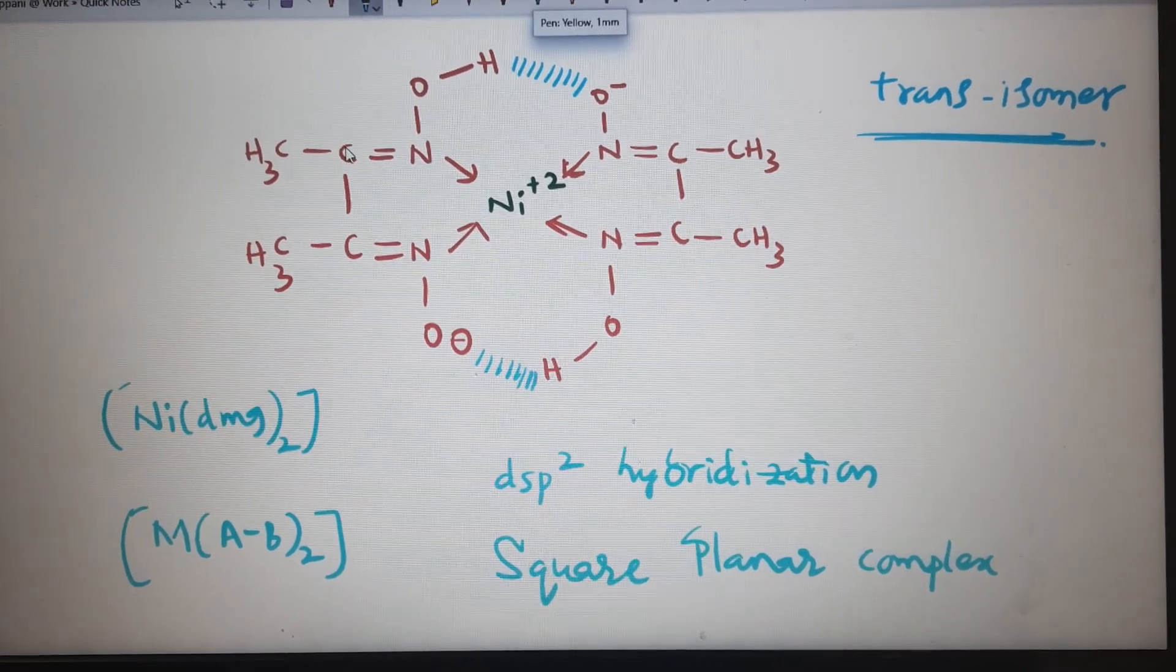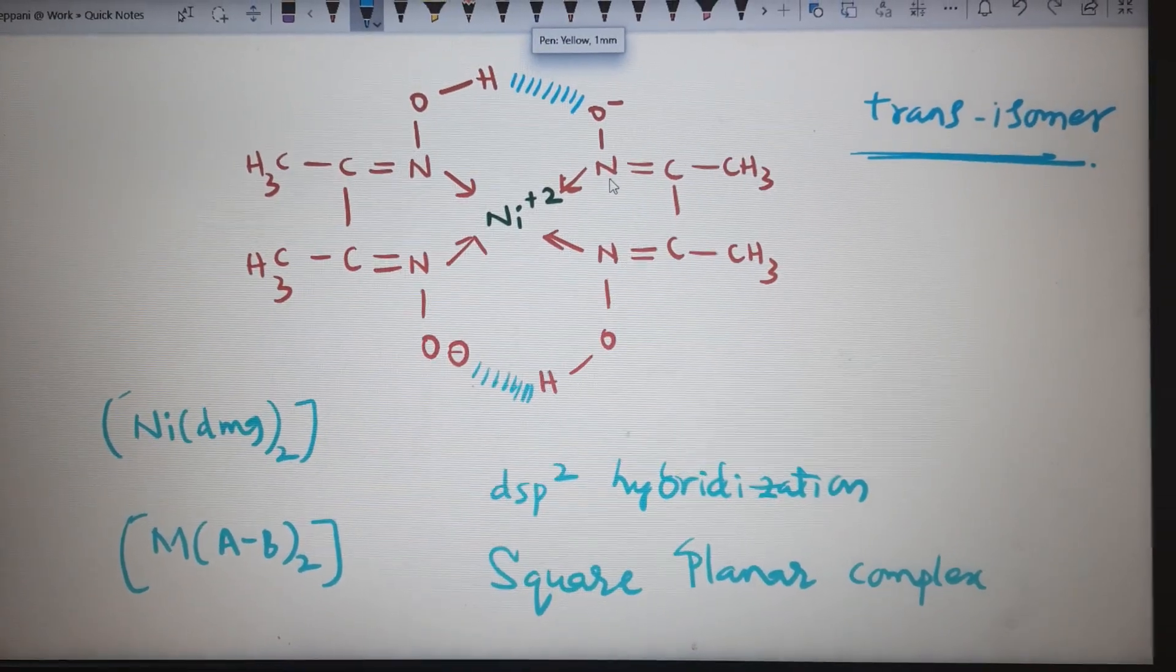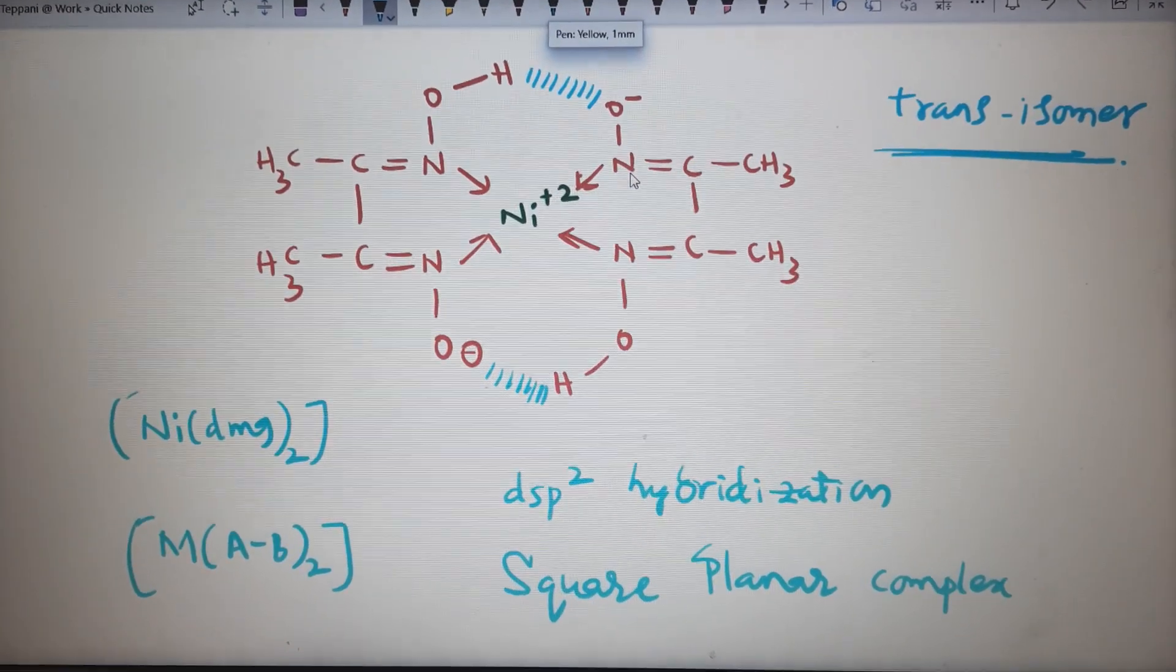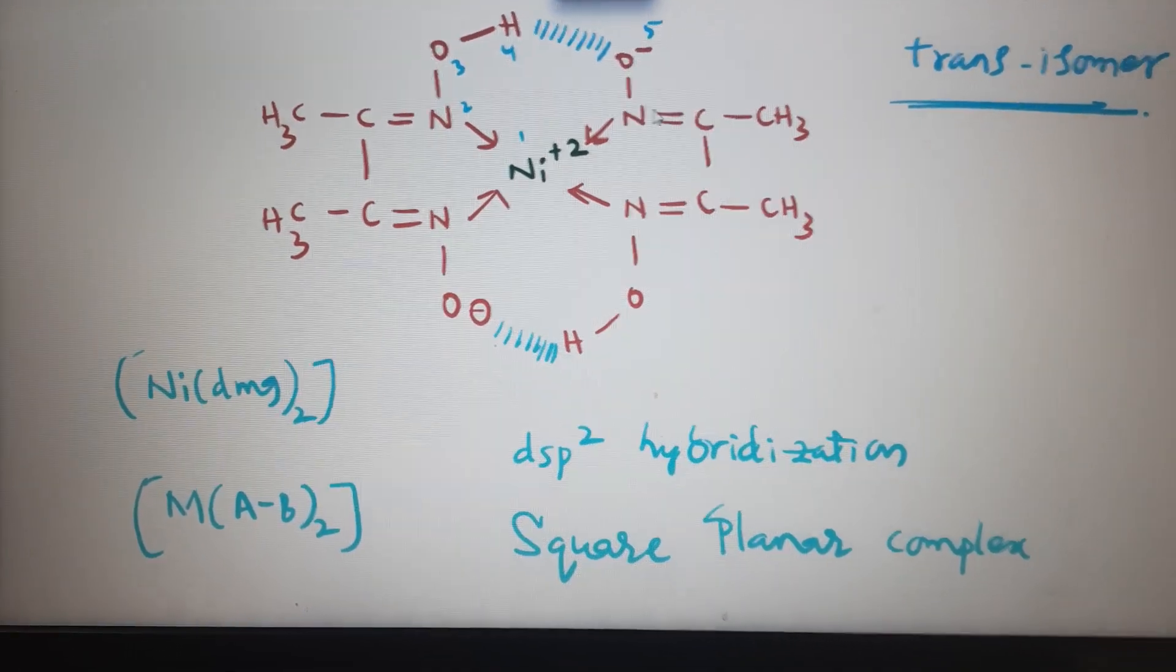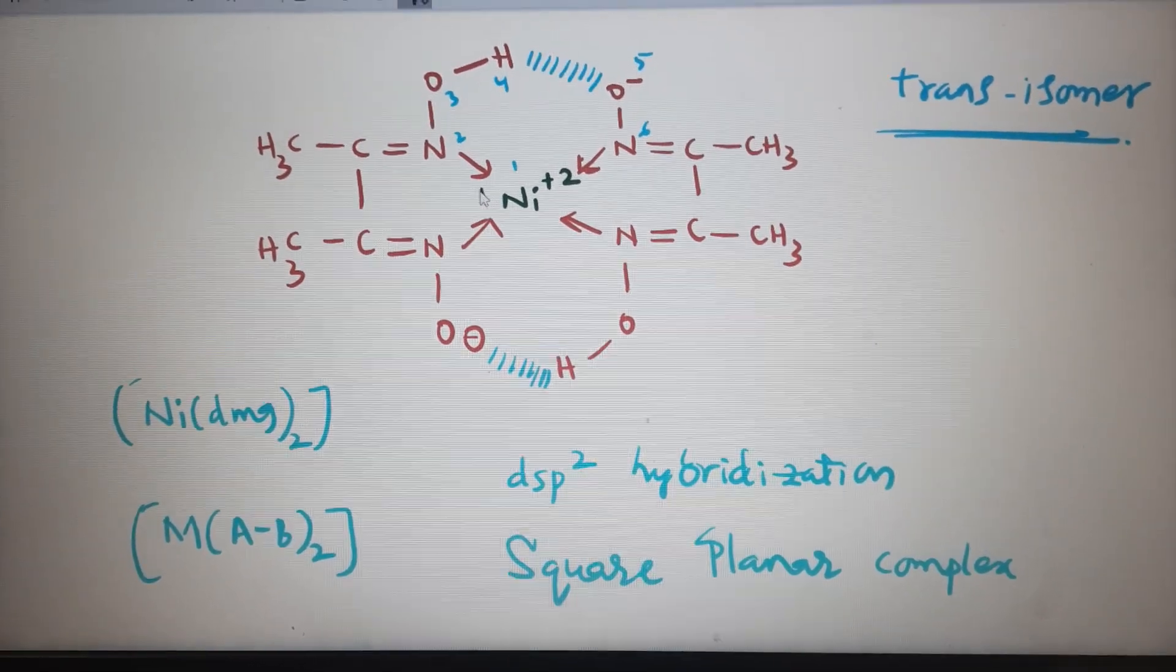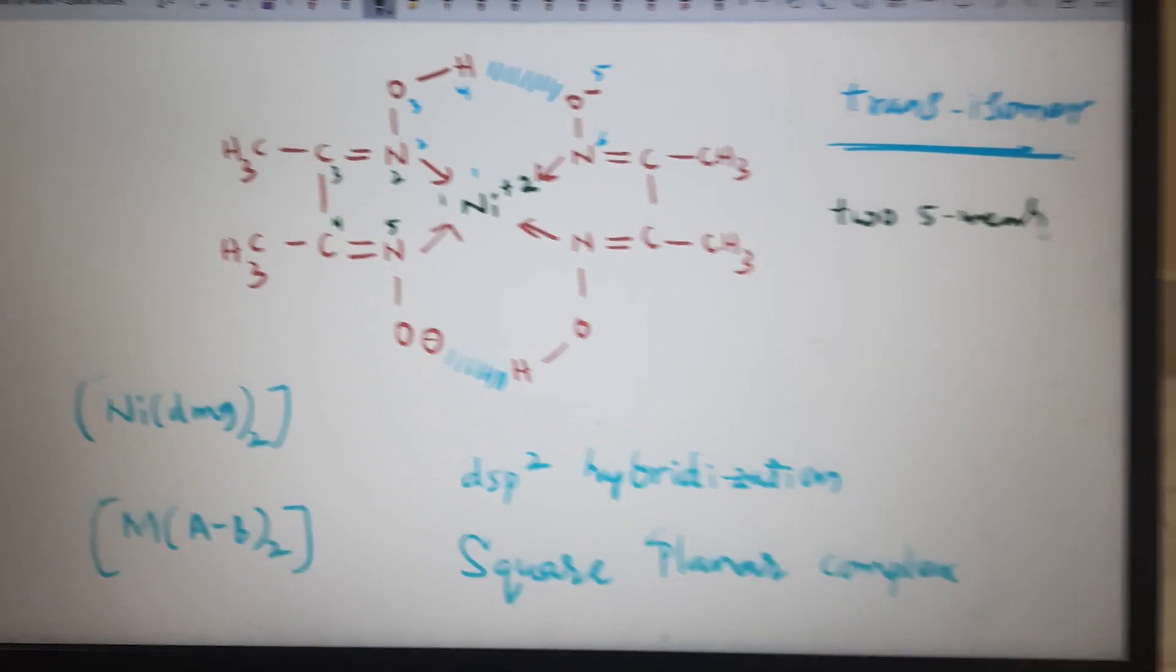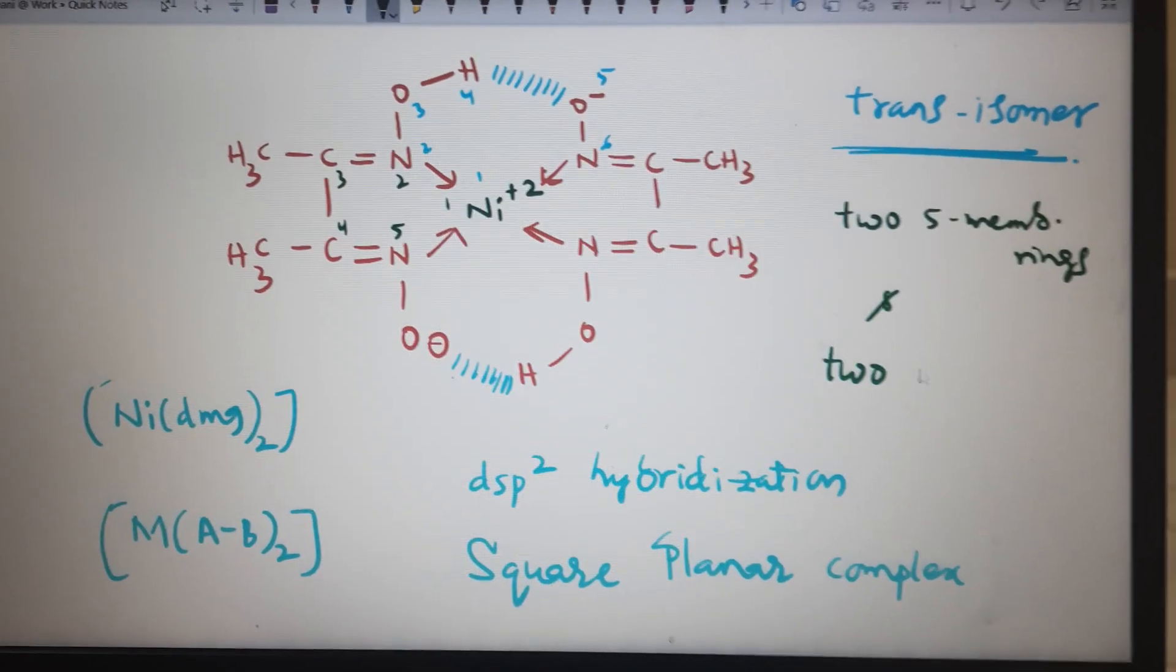Nickel +2: nitrogen 2, 3, 4, 5 forms five-membered rings. Two five-membered rings are there, and six-membered rings with six members. So two five-membered rings and two six-membered rings total.